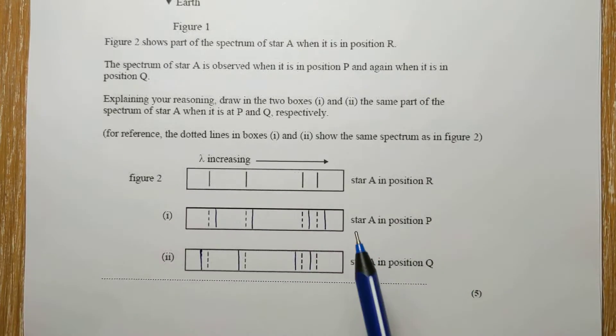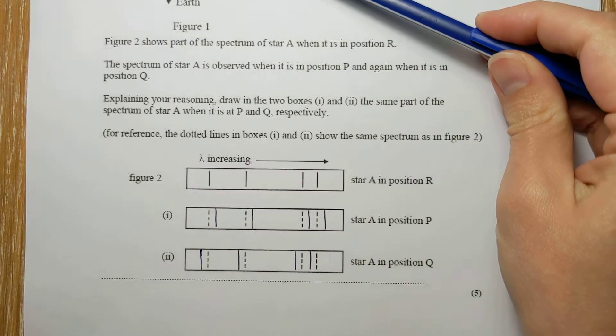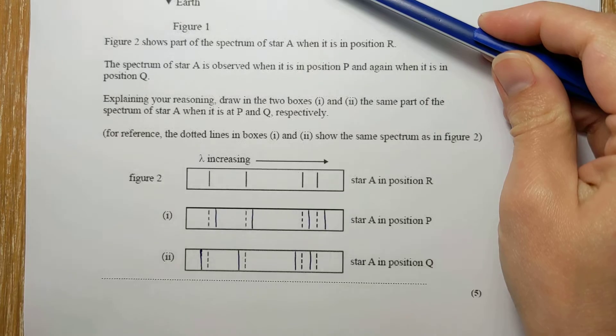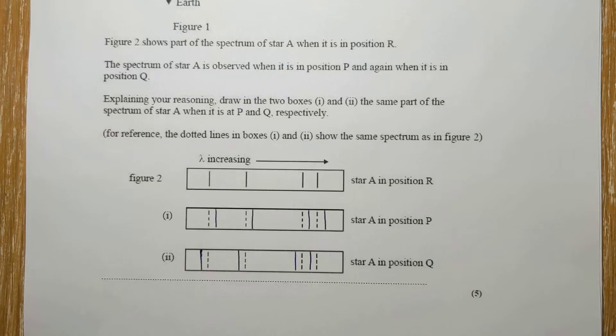And then you write that in words as well and you say that the star is coming towards us at Q and so the light is red shifted and moving away from us at P and so the light is blue shifted. Sorry, other way around.